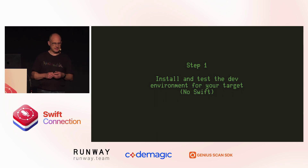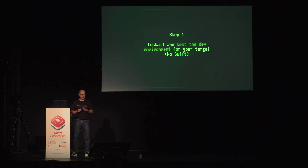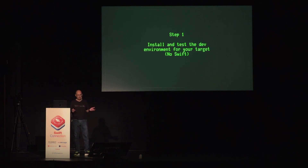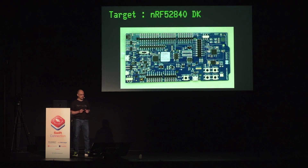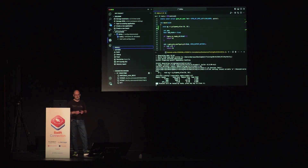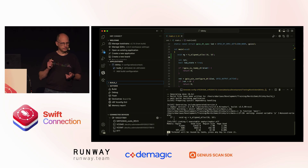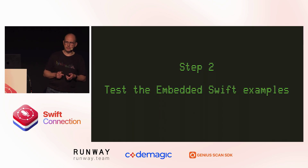If you want to start embedded development, the first thing I would do is install the development toolkit for the board you're targeting — and don't think about Swift yet, just install that and test that it works. In the embedded world, the hello world is blinking an LED. This is the board I'm using: an NRF52840 developer kit, with buttons, LEDs, and all kinds of things to play around with. The SDK comes as an extension for VS Code, so you can stay within VS Code, have completion, and trigger build, debug, and all that from a UI. Once you've confirmed that works, go to the embedded Swift examples that Apple provides.